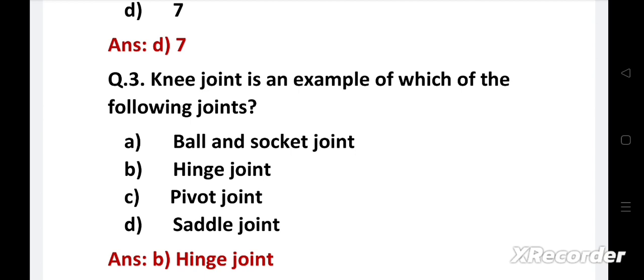The ball and socket joint is a special type of synovial joint in which the ball-shaped surface of one rounded bone fits into the cup-like depression of another bone. Examples of ball and socket joint are hip joints and shoulder joint. Hinge joint is a joint between bones that permits motion in only one plane, for example ankle joint, elbow joint, knee joint, etc.